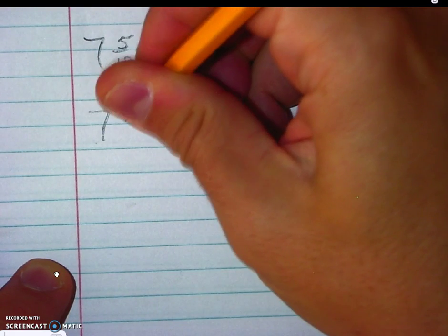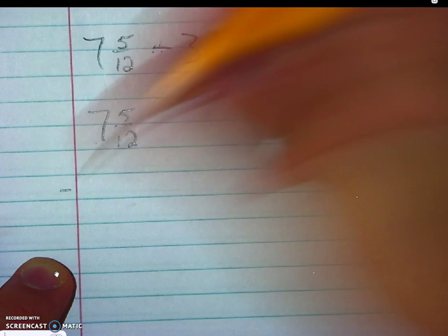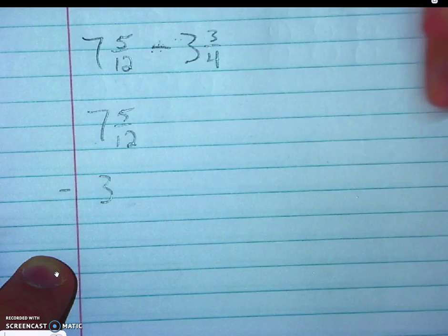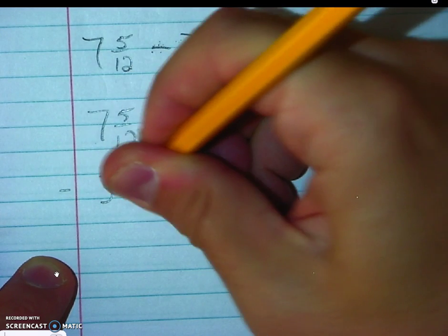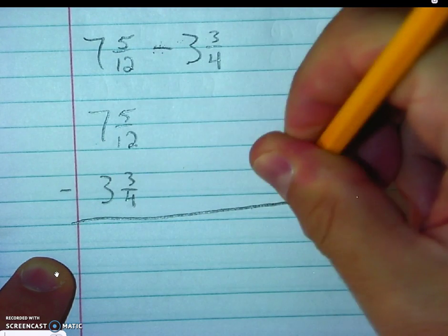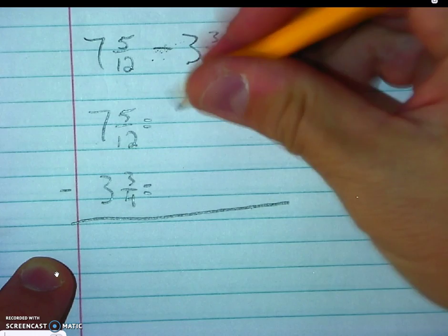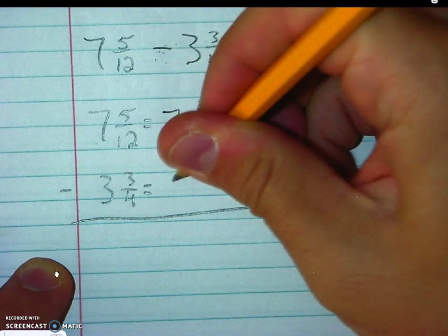I'm going to start by rewriting it, 7 and 5 twelfths. And I'm subtracting 3 and 3 fourths. So I'm going to bring over my 7 and bring over my 3.